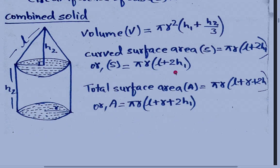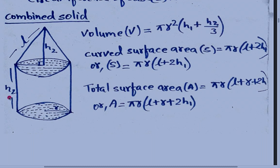The radius of the cone and the radius of the cylinder are both equal, so it is not denoted by R1 or R2 — both are the same, denoted only as R. However, H is different: H1 means the height of the cone, and H2 means the height of the cylinder.